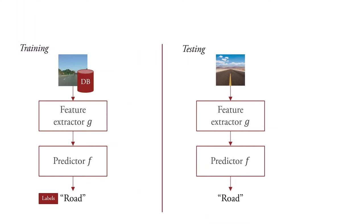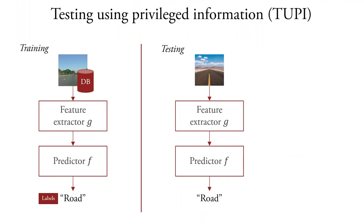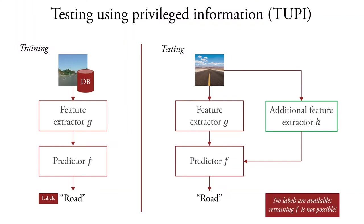We propose the complementary idea of testing using privileged information, or TUPI. Here we have new privileged information as additional features at test time. TUPI is critically different from LUPI in that, as is usual in testing, no labels are available, and so retraining the predictor F on the additional features is not possible directly.